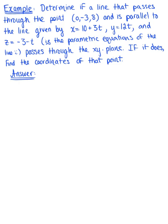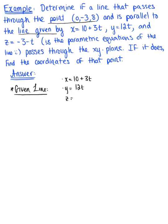We need to find the line passing through that point and parallel to the given line. So let's start by thinking about what the given line is. We have it in parametric equation form: x = 10 + 3t, y = 12t, and z = -3 - t, where t is an element of the real numbers.